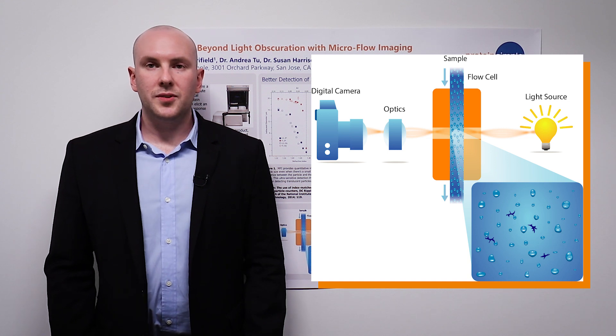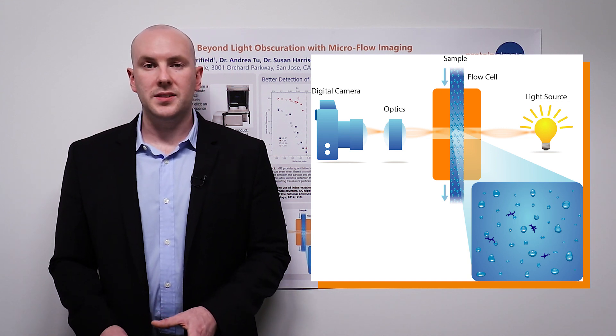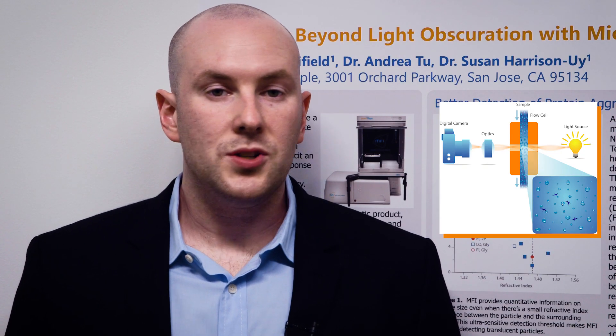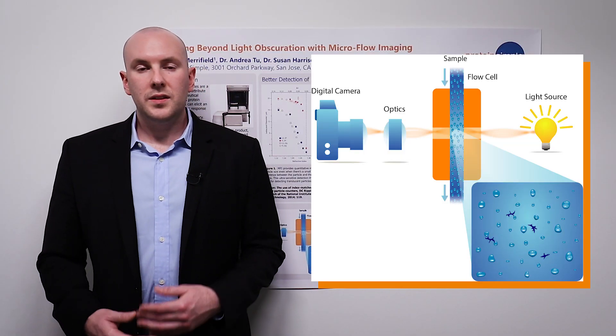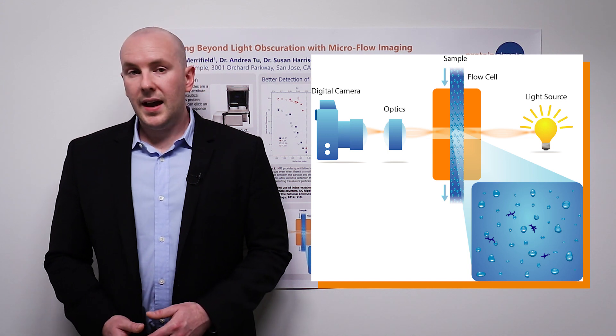In between that, we have the flow cell, and the flow cell is crucial for guiding the path of the sample past the optics. This provides two essential things. First, it makes sure that we image as much of the sample as possible — MFI is able to image up to 85% of the sample that is passed through. This is very important for ensuring that the results are statistically significant, and if you're doing something like final product QC, you're able to analyze the vast majority of the sample recovered from that specific vial or syringe.